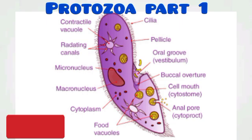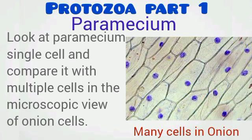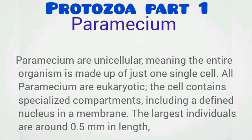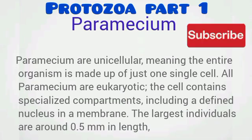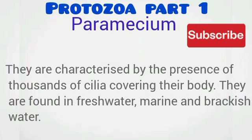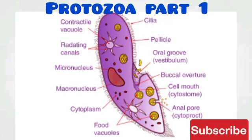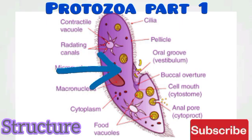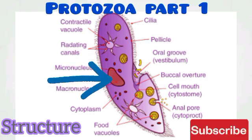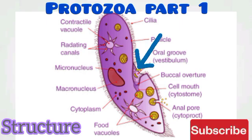Paramecium, as you can see from the diagram, is a single cell — the entire organism is actually one cell. It has a nucleus and other specialized organelles, meaning it is a eukaryotic organism. The entire length is around 0.5 millimeters and the body is entirely covered with cilia used for movement. They are found in fresh water, brackish water, as well as marine environments. They possess a micro (small) and macro (large) nucleus, and an oral groove used for taking in food.